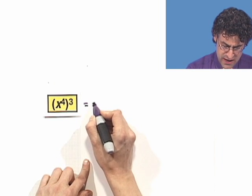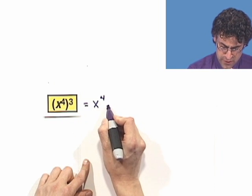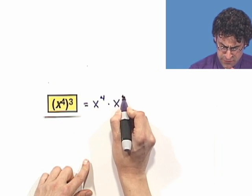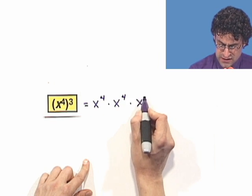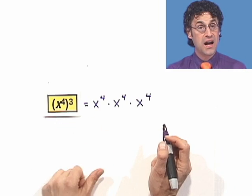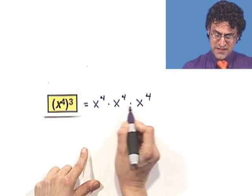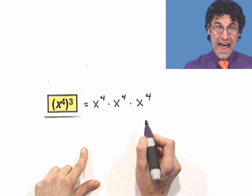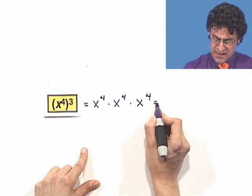Well, if we think about it, it means that I have x to the fourth times x to the fourth times x to the fourth, right? I have x to the fourth being multiplied by itself three times. But we know what to do now, since we have the same base and we're multiplying, we add the exponents.